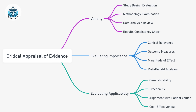Validity involves the evaluation of four main elements. First, the study design evaluation. This step involves a detailed examination of the study's design — understanding how the research was structured to answer the specific question. Was it a randomized controlled trial, a cohort study, or another type? The design impacts the study's reliability and potential bias.